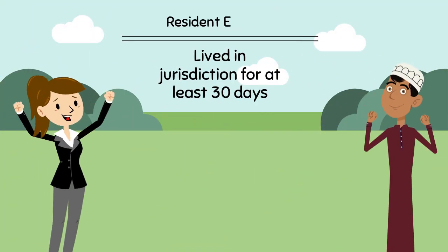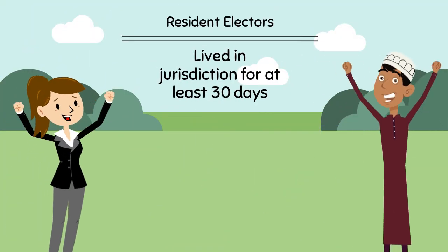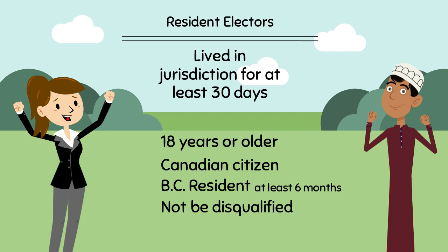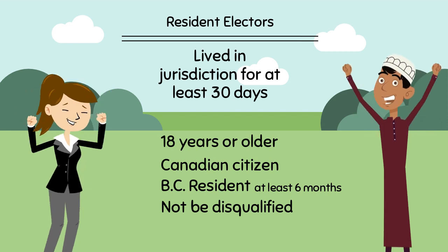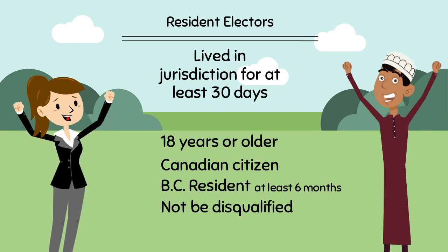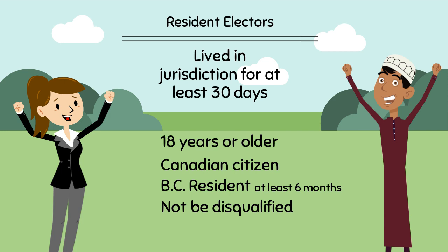Resident electors live in the jurisdiction and must be at least 18 years of age on general voting day, be Canadian citizens, have resided in BC for at least six months before registering to vote, and not be disqualified.